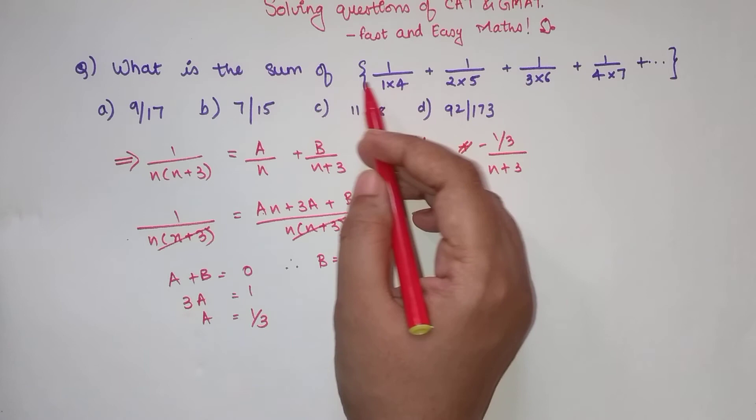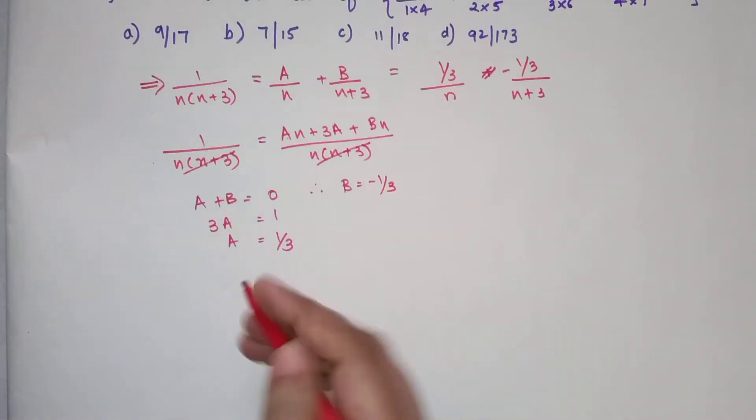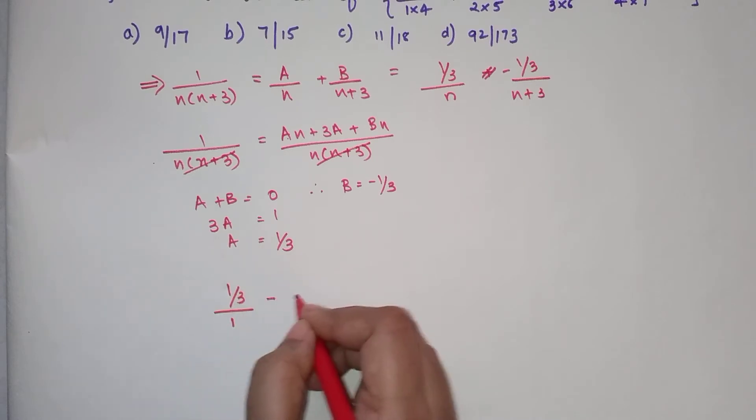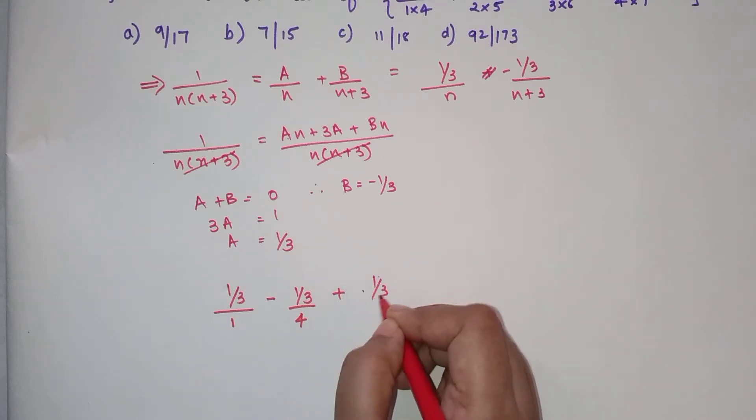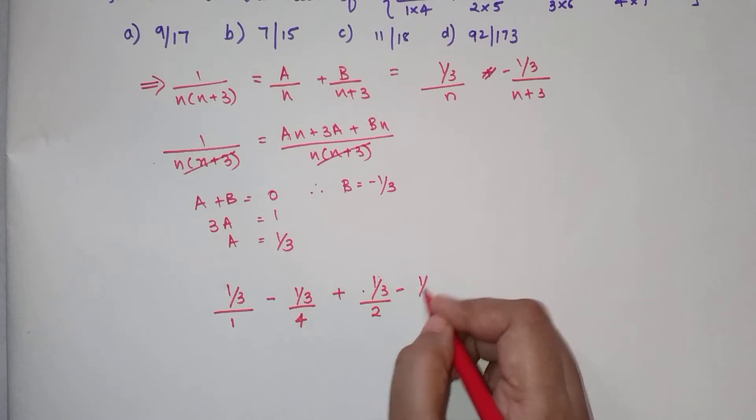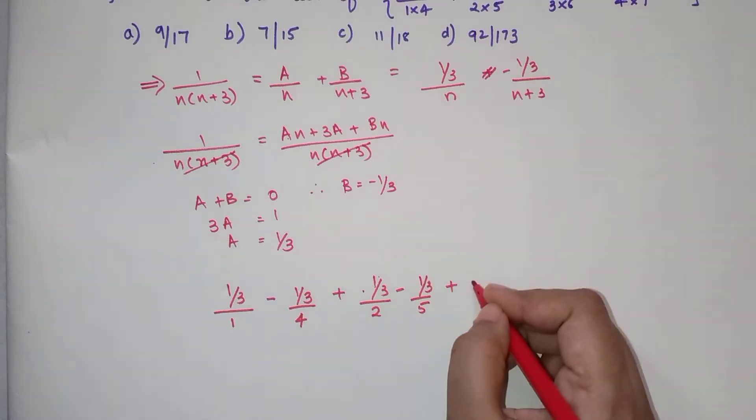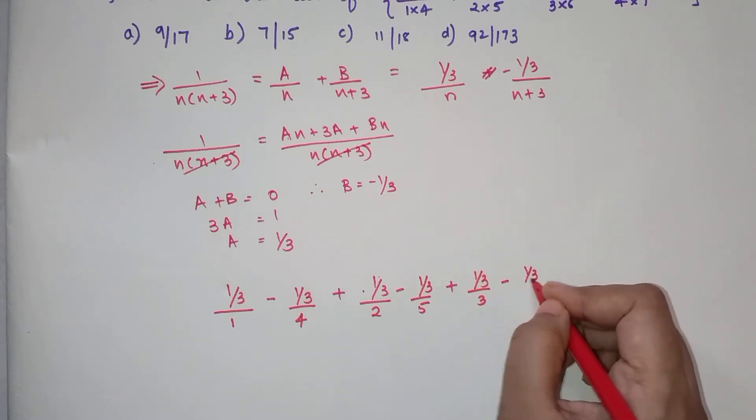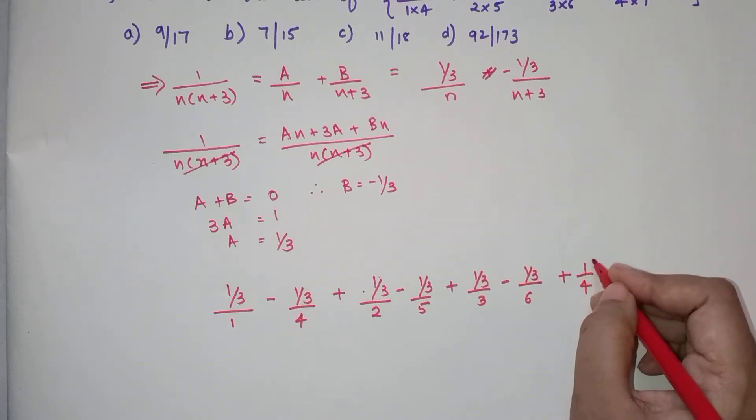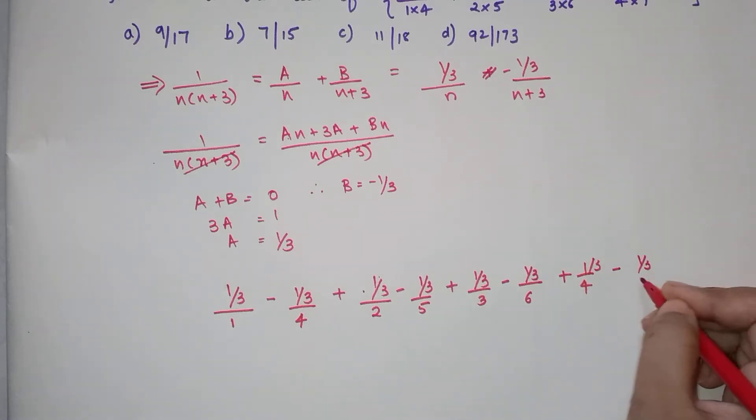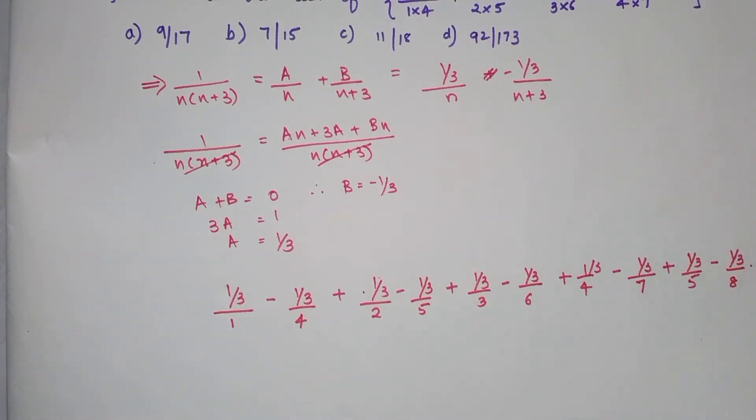So if I want to write all of these in terms of the general form, I can write 1 upon 3 upon 1 minus 1 upon 3 upon 4, plus 1 upon 3 upon 2 minus 1 upon 3 upon 5, plus 1 upon 3 upon 3 minus 1 upon 3 upon 6, plus 1 upon 3 upon 4 minus 1 upon 3 upon 7, and so on and so forth.